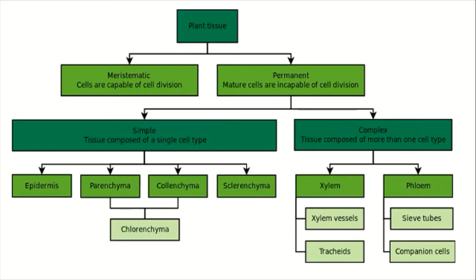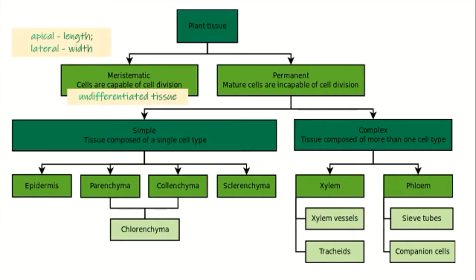When we say meristematic, these are tissues composed of cells that are capable of cell division, meaning they're actively dividing. These are also known as undifferentiated tissue, and they are responsible for the growth of plants. Depending on their location, they could be apical or lateral meristematic tissue.